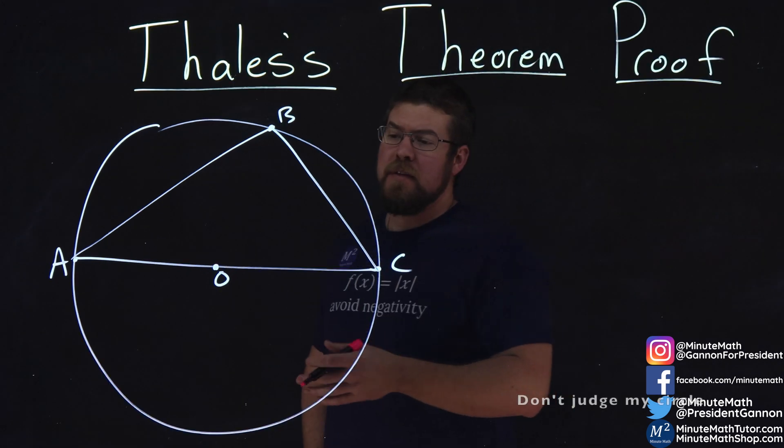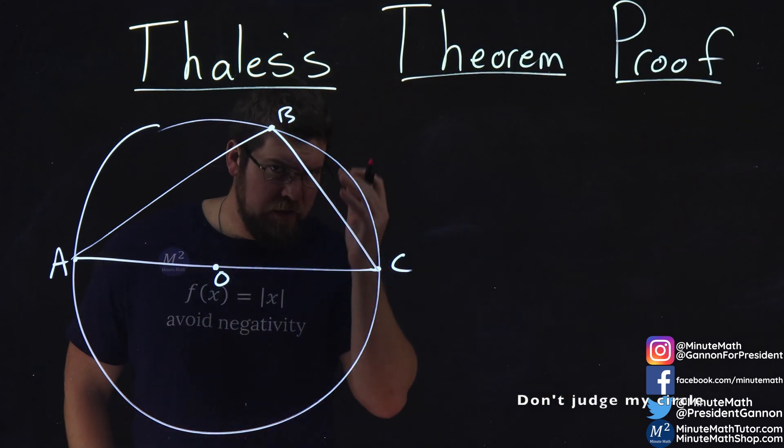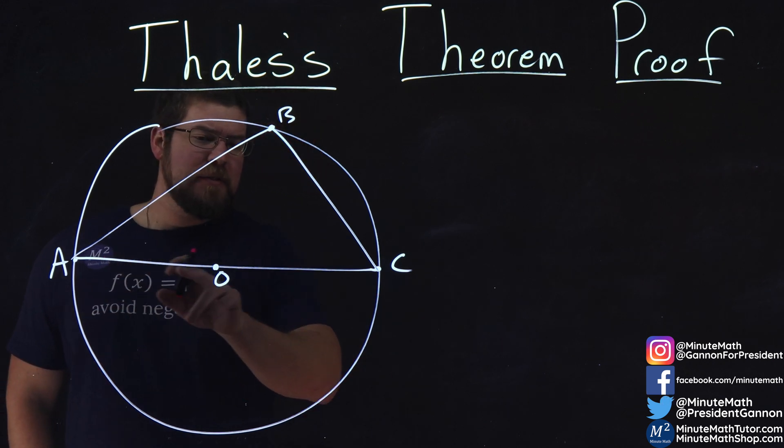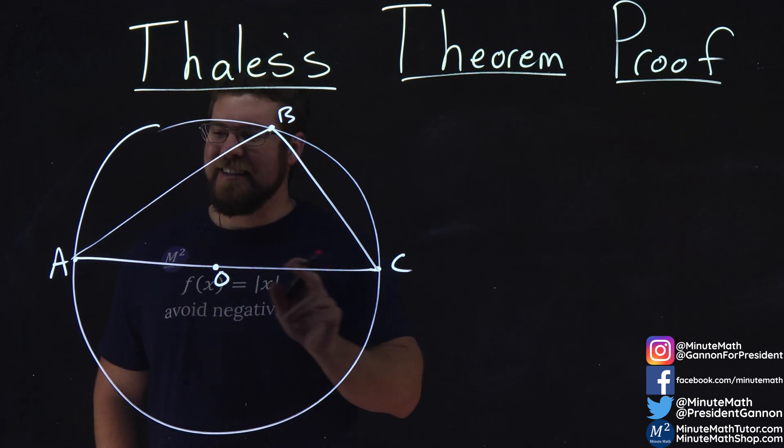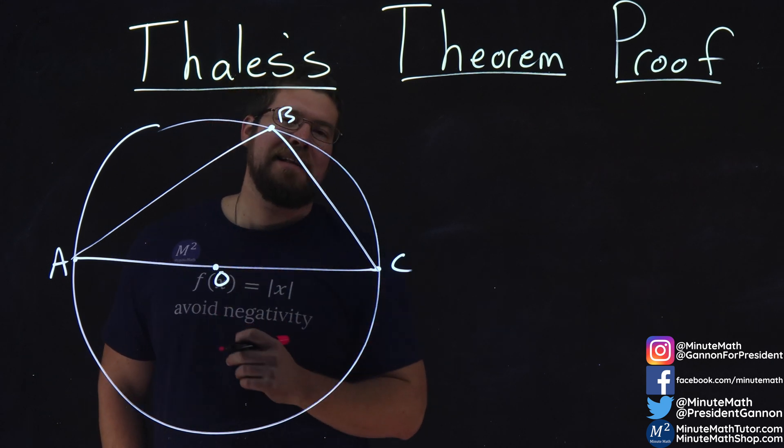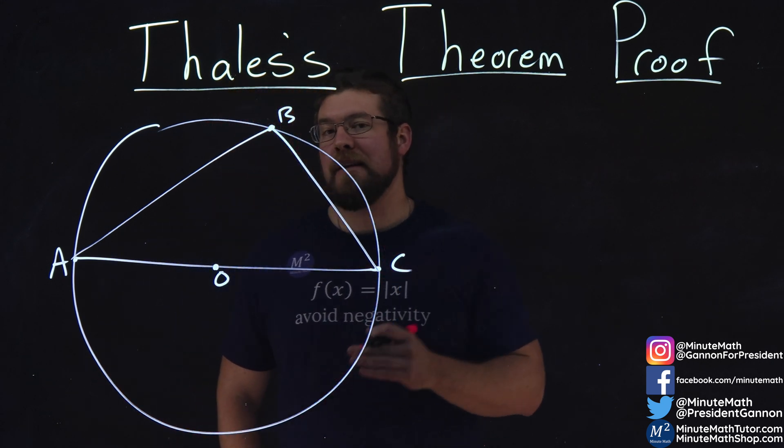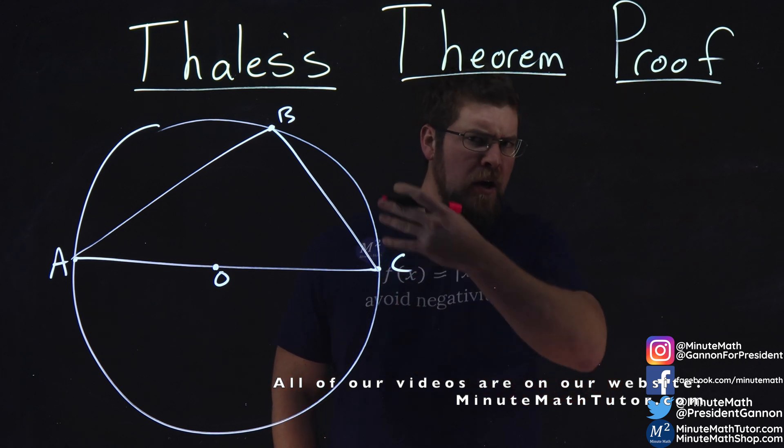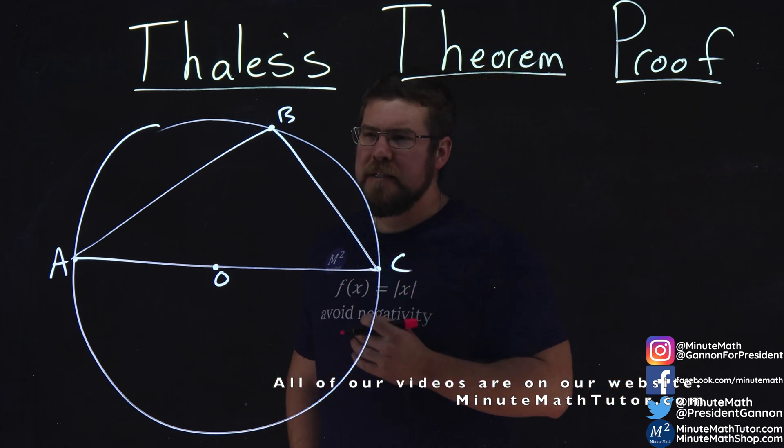Thales' Theorem tells us that if we have a triangle ABC here, and the hypotenuse here, or this length here is AC, that angle B right there is always going to be a 90-degree angle. So let's go prove that point right here.